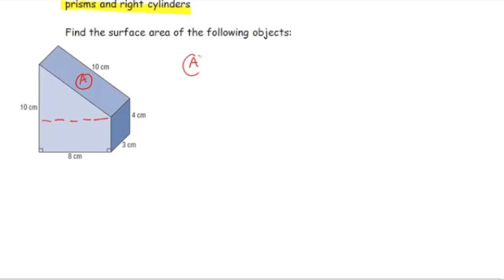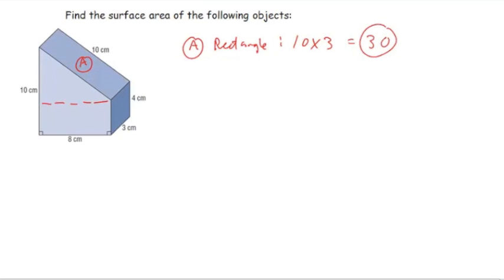So, I'm going to call that top side face A. The top side face A is just going to be a rectangle that has dimensions of 10 and 3. So, the area of side A is going to be 30 centimeters squared. I'll leave the units off as I go through, and we'll include units at the end, just to keep it looking a little bit cleaner.